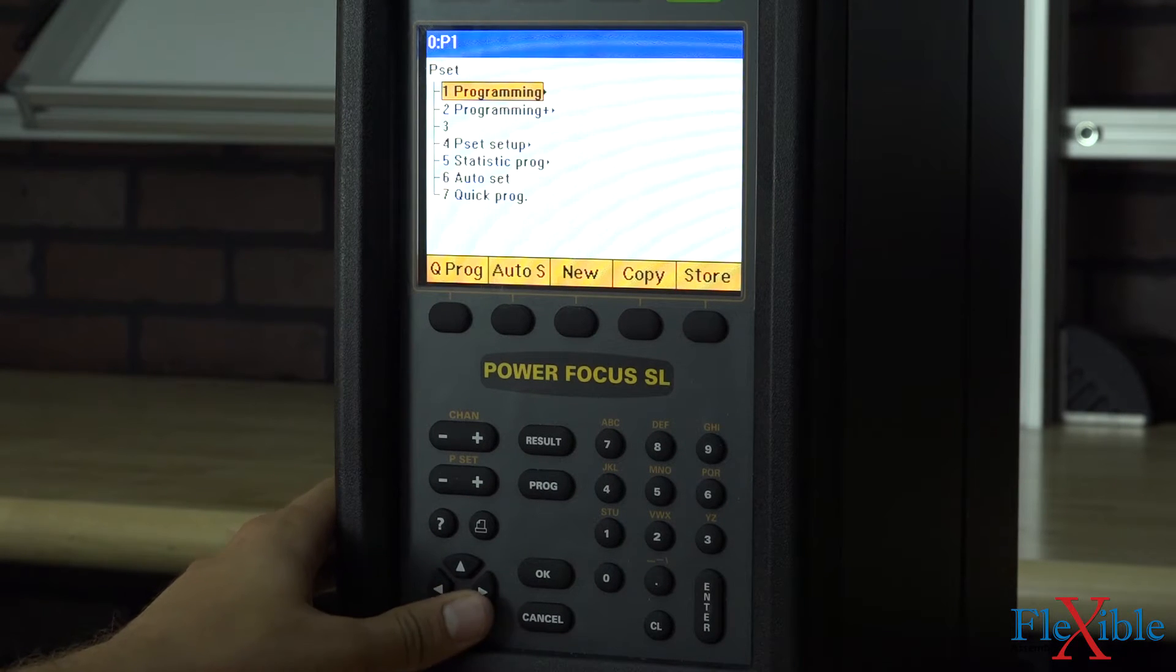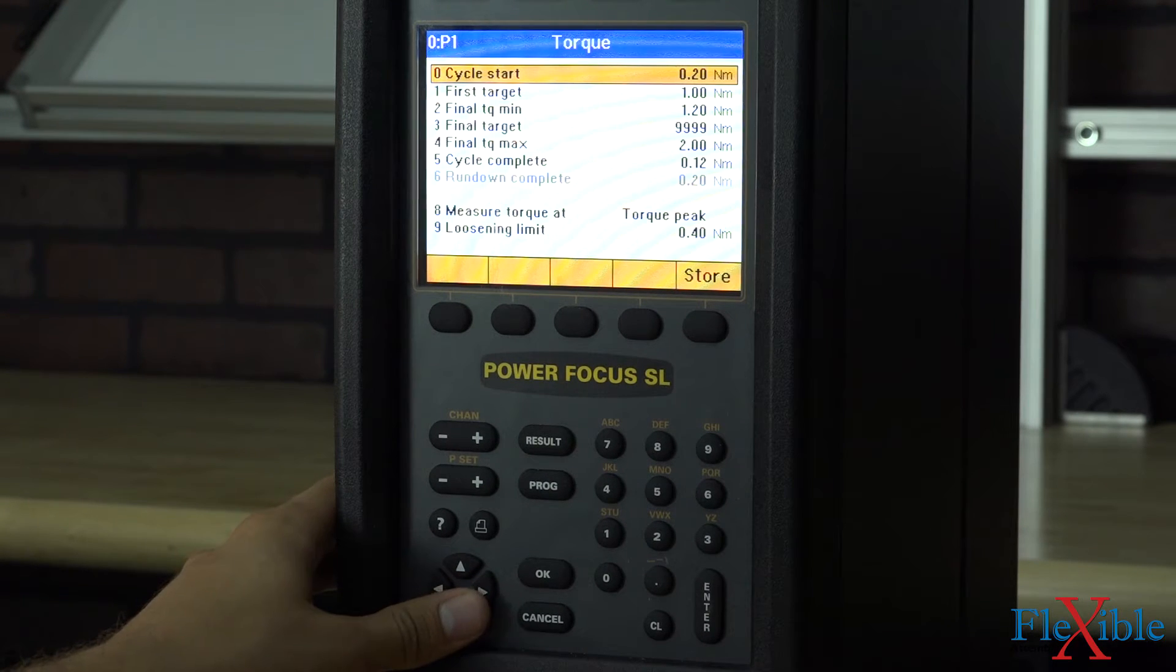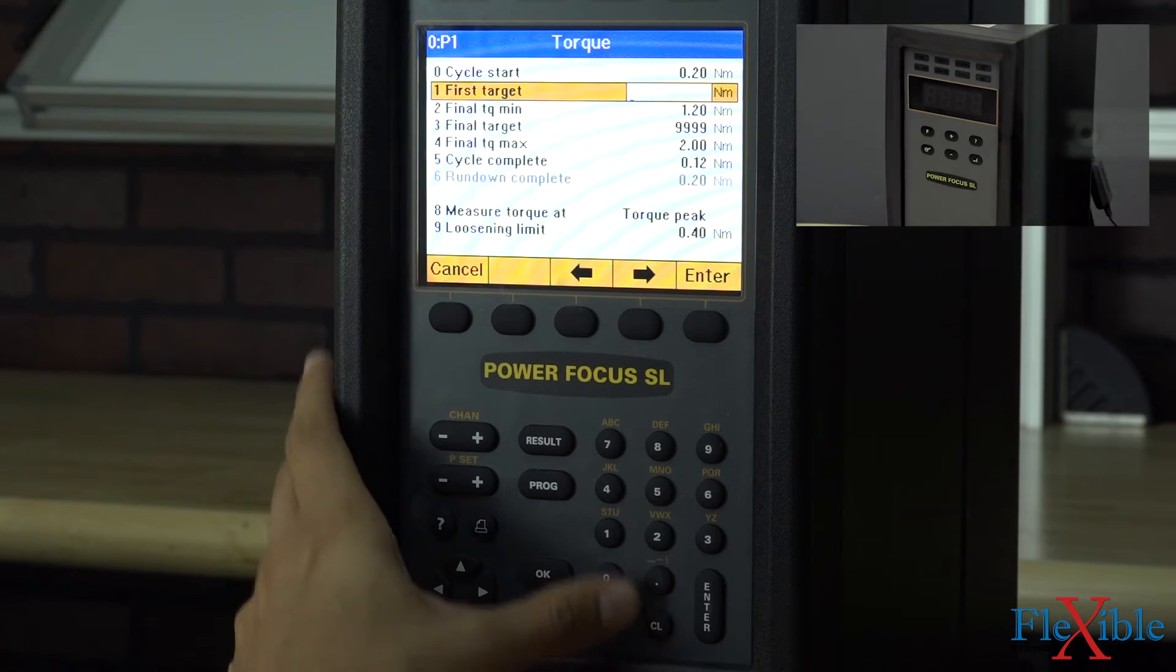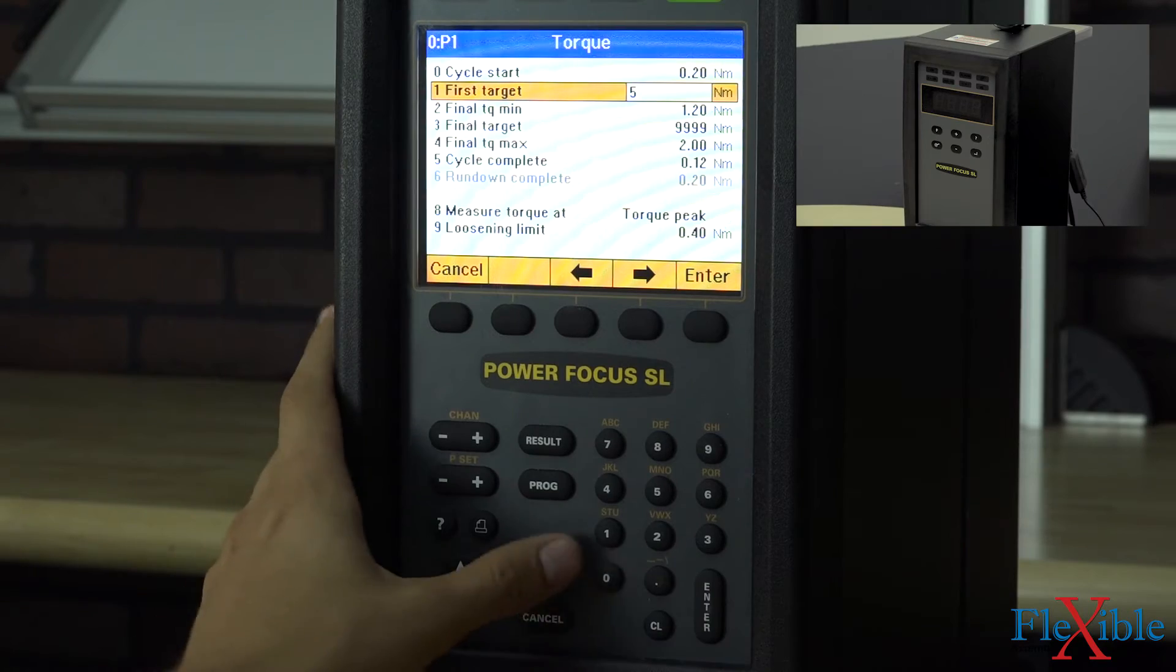To program our p-sets we could do so using the keypad and screen included on the controller. The compact model only has a four digit display and requires a PC with ToolsTalk PF software to program.